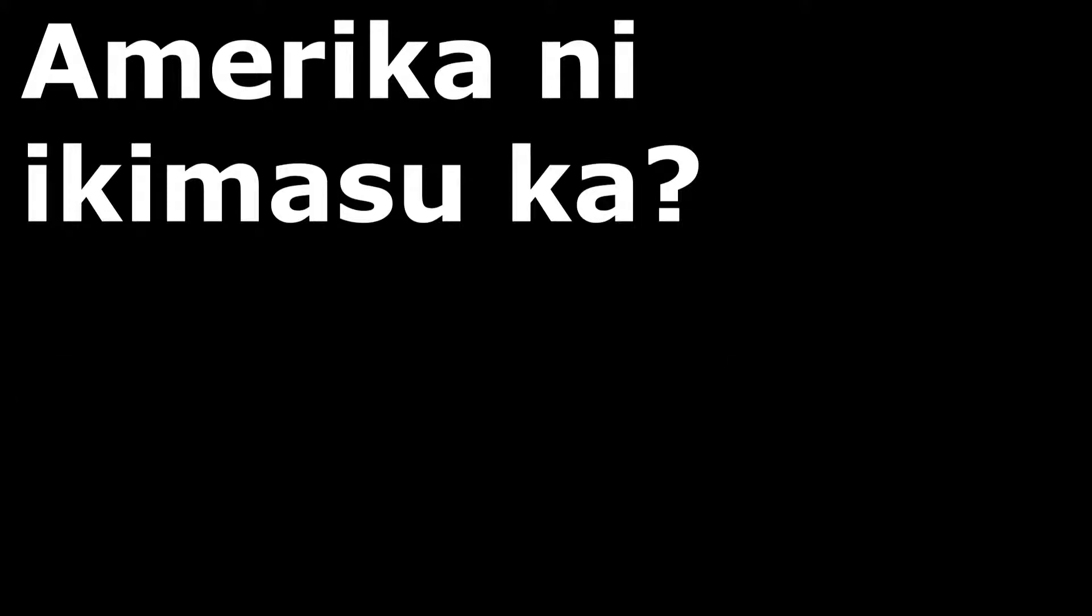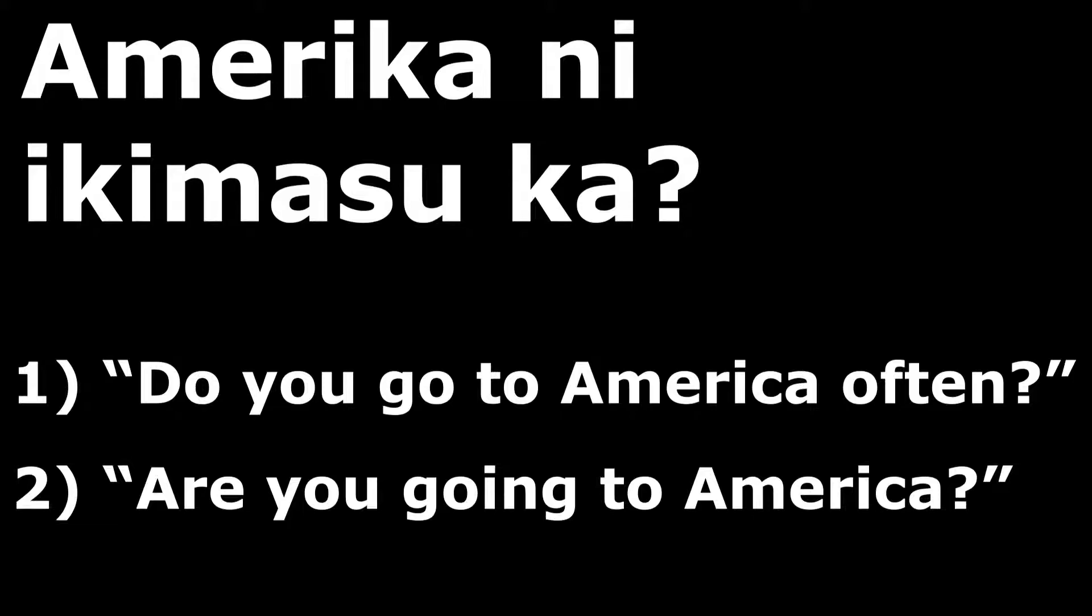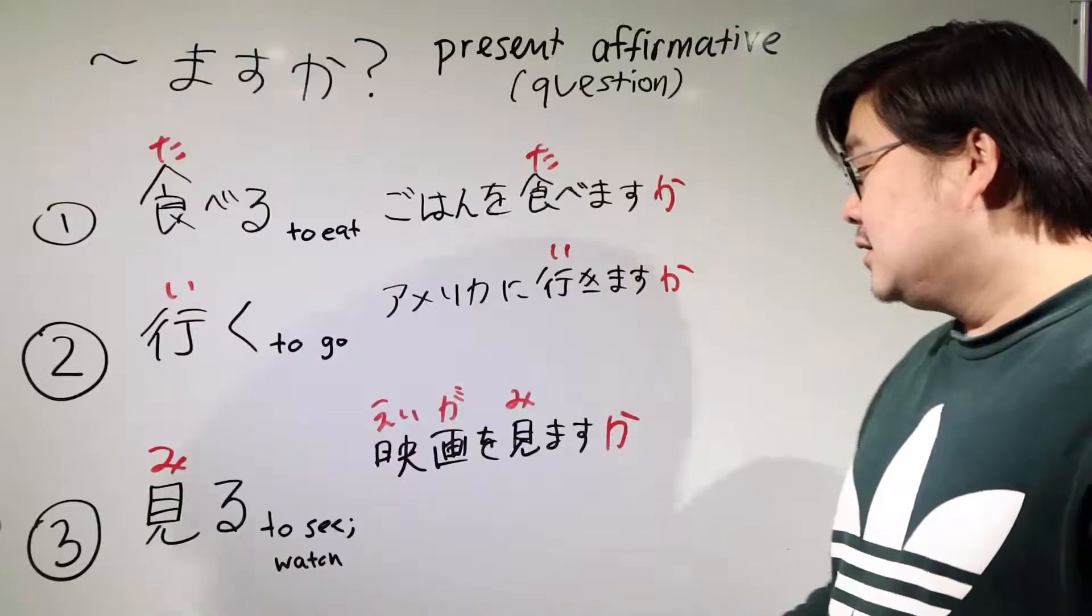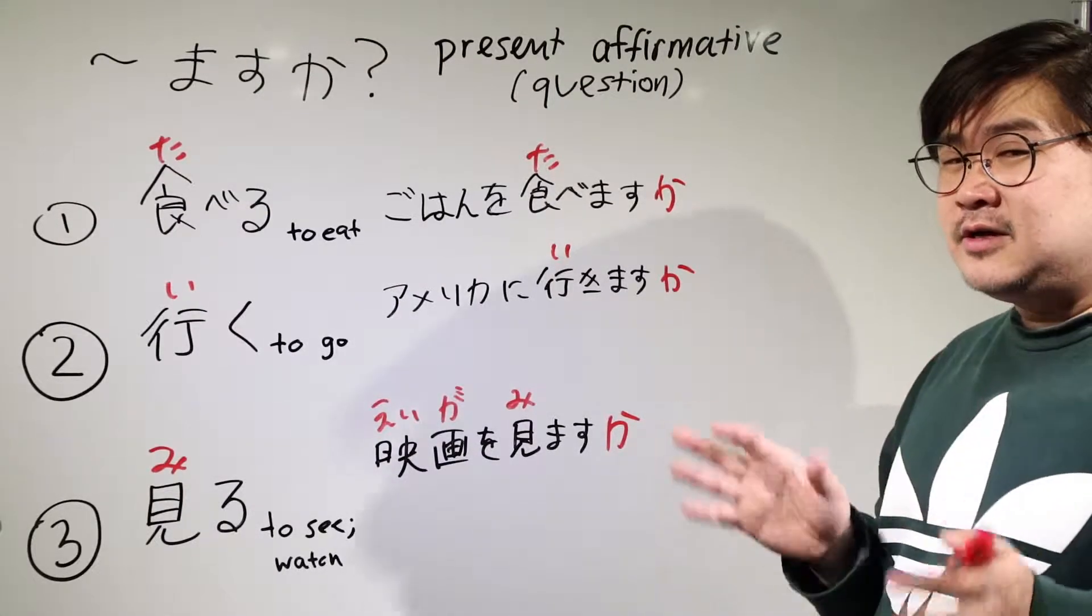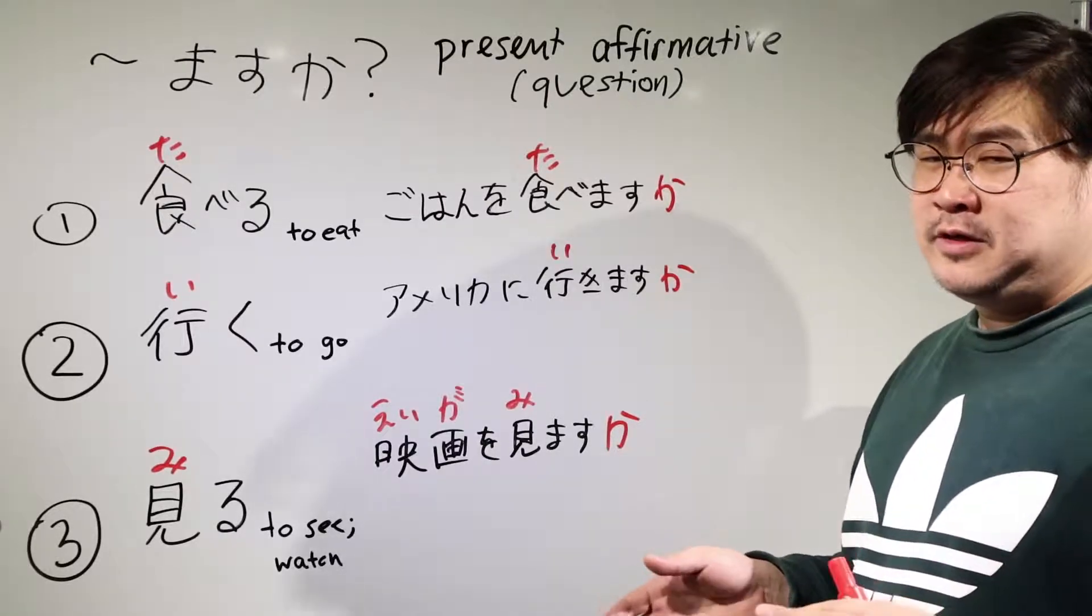In the second example, we have ikimasu. Amerika ni ikimasu ka - do you go to America, as in do you go to America often for business trips, or are you going to America like tomorrow or next week. You just gotta look at the context and then you'll know which one they're talking about.